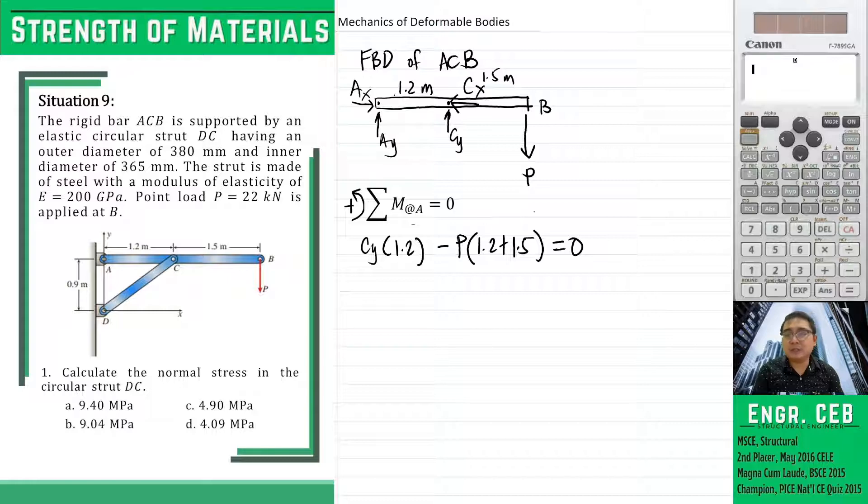We have the value of P, which is 22 kN. Therefore, we can now solve for CY. So we substitute the value of 22 in our equation and then we can now solve for CY. We have CY equals 49.5 kN.